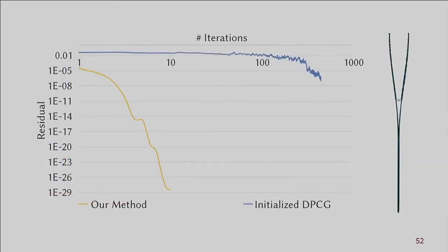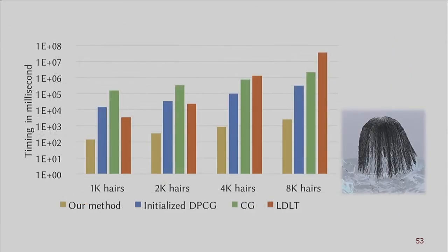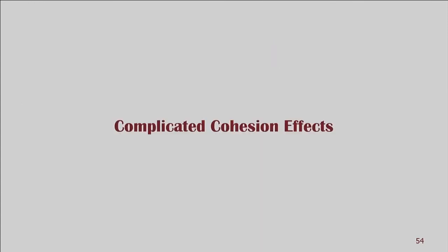We compare our method with diagonally preconditioned CG initialized with local solve — even for just two hairs, our method achieves several orders of magnitude faster convergence. For the hair flick example with 8K hairs, our method is 100 times faster than diagonally preconditioned CG initialized with local solves, 800 times faster than regular CG, and 14,000 times faster than a direct LDLT solver.